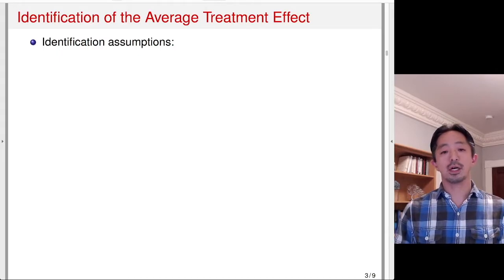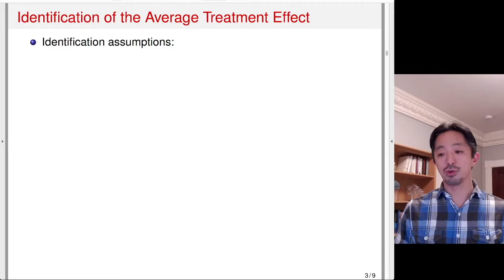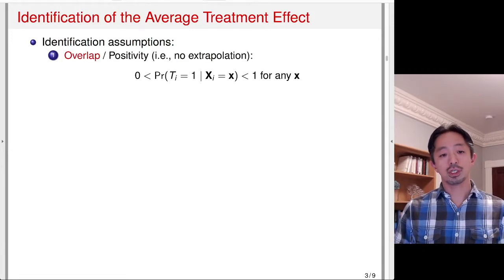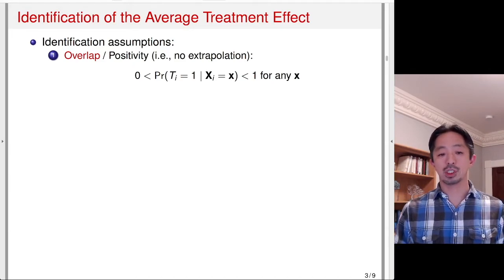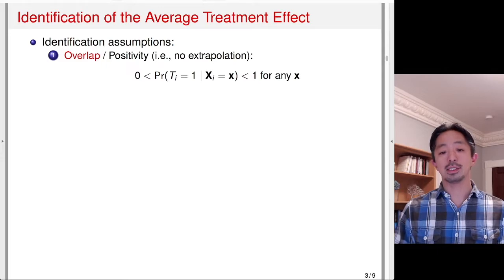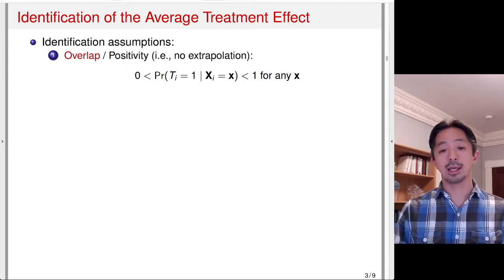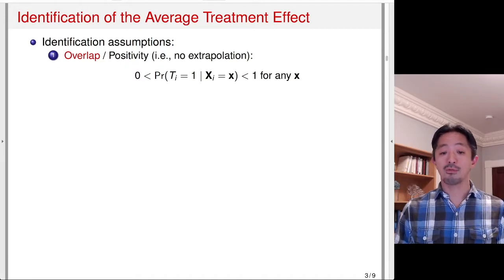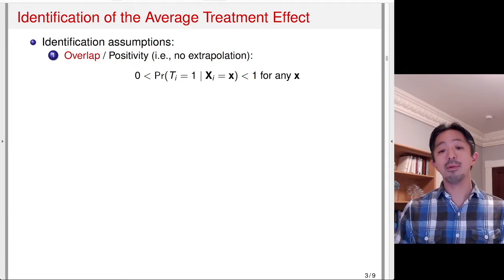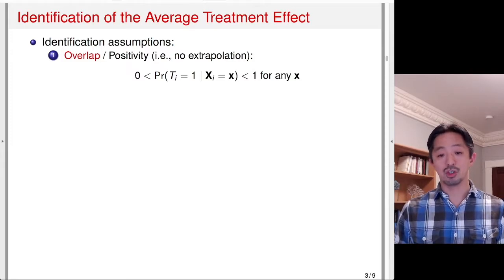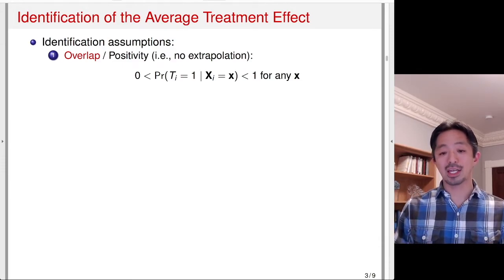How do we identify the average treatment effect in observational studies? We'll introduce the standard assumptions often used by researchers. First, we often assume overlap — sometimes called positivity — which implies there is no extrapolation. The assumption says that for any observed pre-treatment covariate Xi, the treatment probability is bounded away from zero and one. This means everybody has a non-zero probability of receiving the treatment and a non-zero probability of being assigned to the control group — there is some stochasticity in who gets treatment.